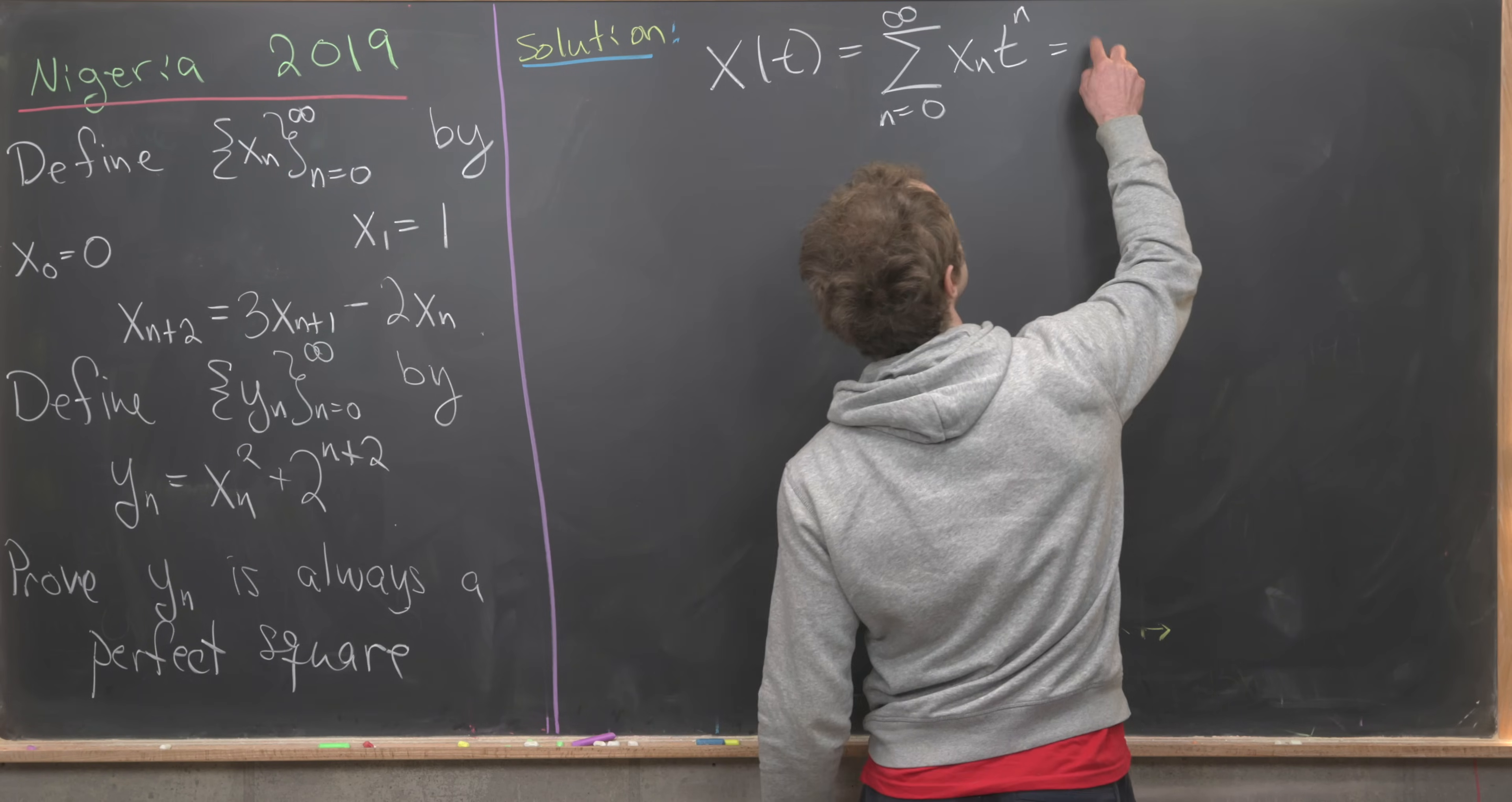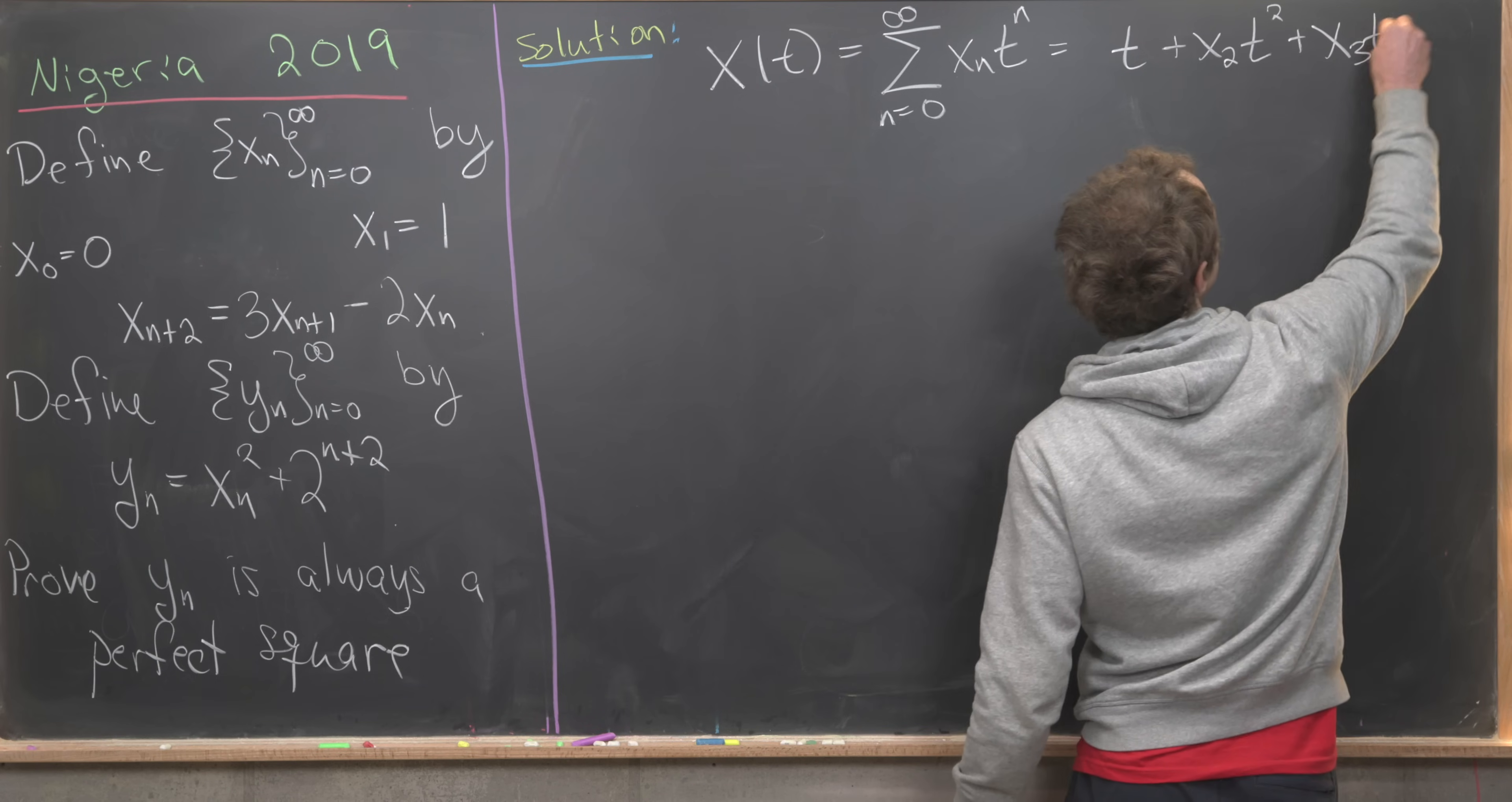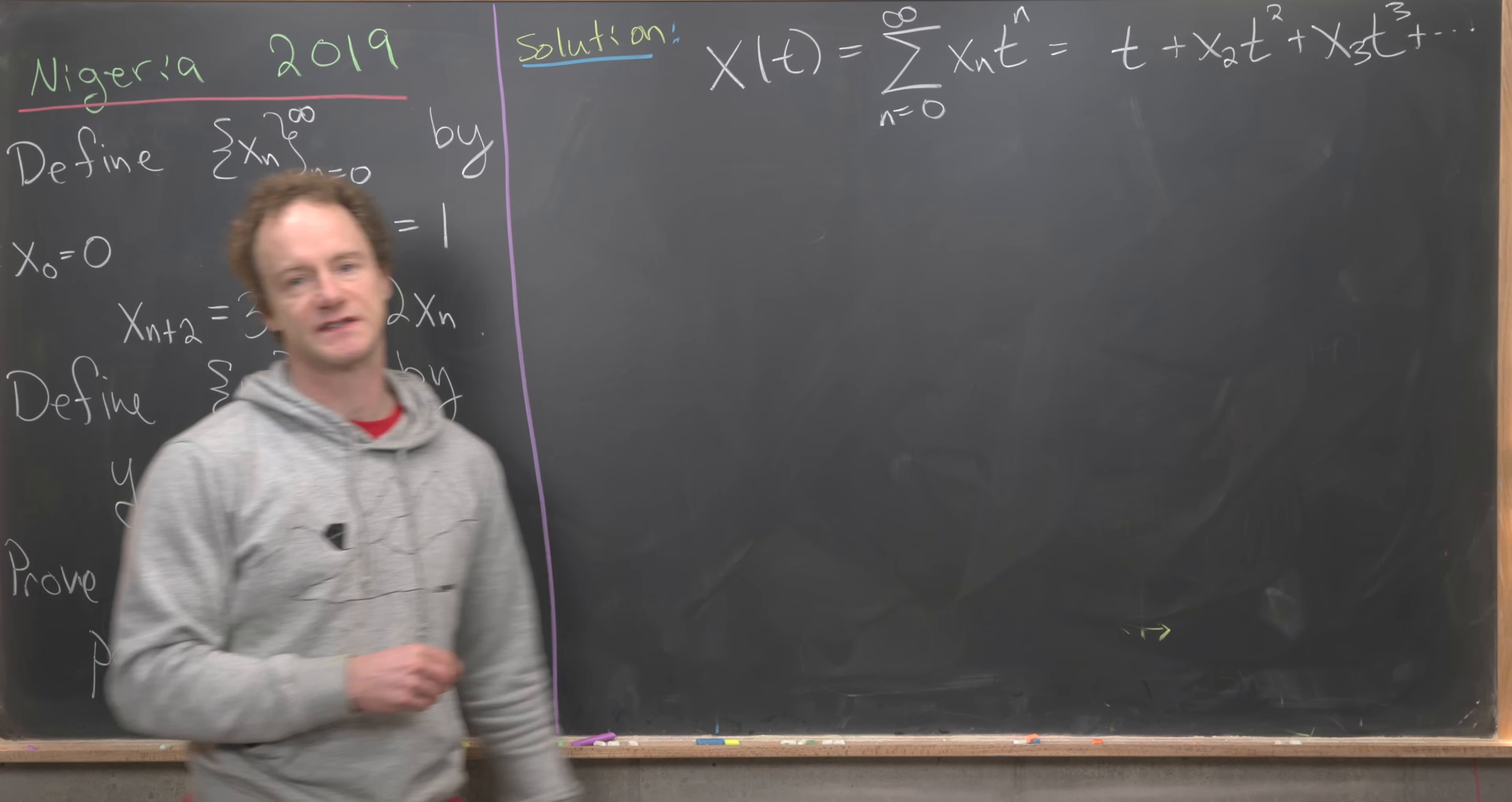I want to point out that this looks like x sub 0 which is 0 plus x sub 1 times t, so that would just be 1 times t plus x sub 2 times t squared plus x sub 3 times t cubed and so on. We're not going to worry about what values of t this converges for. This is really just a combinatorial tool for figuring out a closed form for this sequence.